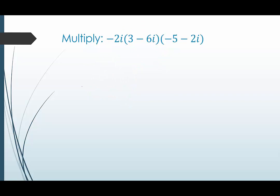In our last example, we're actually going to be multiplying three complex numbers together. Anytime you do a multiplication with three factors, you can only multiply two factors at a time. So I'm going to start with this product here. Negative 2i times 3 is negative 6i. Negative 2i times negative 6i. Negative times negative is positive. 2 times 6 is 12.